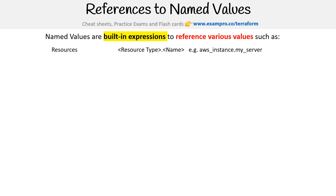The first is resources. The way resources work is that you start with the resource type, such as an AWS instance, and then you use the name of it. So there's nothing that starts before the left-hand side — it just starts with that resource type. Then you have input variables, and that starts with 'var.' — so that's the singular 'var'.